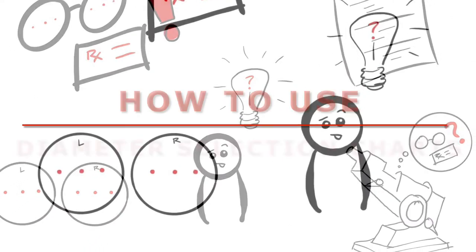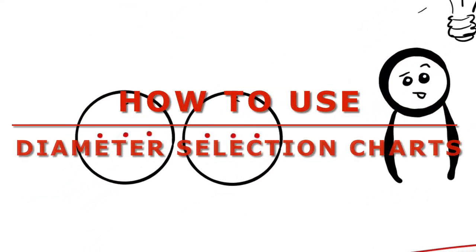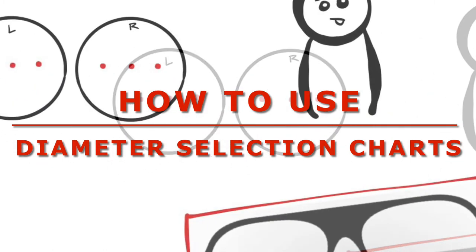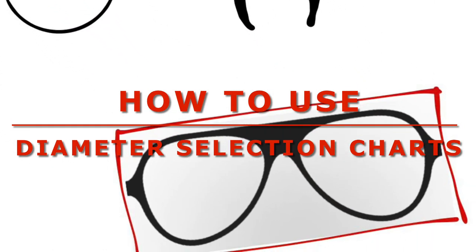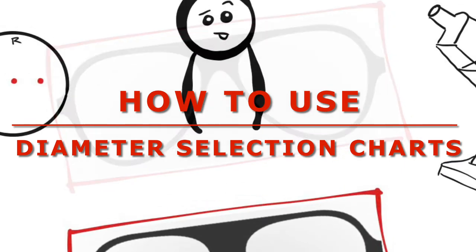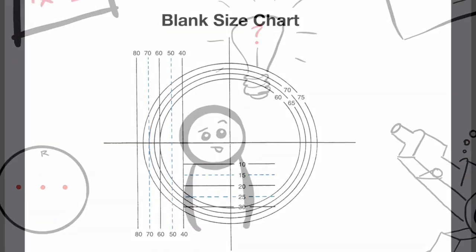In this video, I'll show you how to use a blank selection chart to determine lens blank size. These charts are useful and provide fast and accurate results that account for both horizontal and vertical decentration.